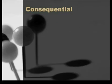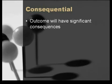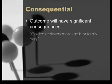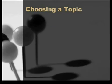Finally, although a topic may be debatable with solid, plausible reasoning, the outcome must be of consequence. For example, the topic 'golden retrievers make the best family dog' is certainly debatable, and the arguments on both sides are strong — disposition, faithfulness, intelligence, etc. But in the end, after the debate is over, the consequences are not significant. With that background, let's walk through the three main steps in choosing and refining a research paper topic: choosing, filtering, questioning.